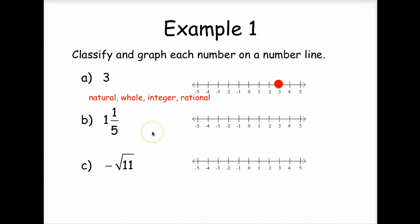How about 1 and 1 fifth? Where would we graph it? You're right. Just a little bit past the 1. So if we divided these into 5 sections, it'd be just a little bit past the 1. And it is a rational number.